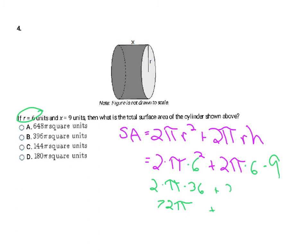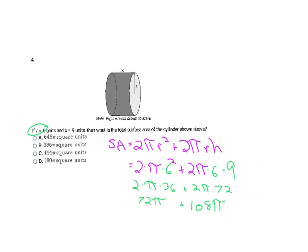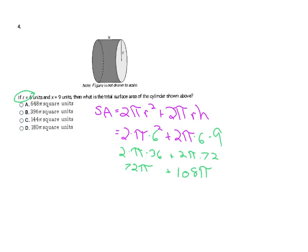For the lateral part: 2 times pi times 6 times 9 = 2 times pi times 54 = 108 pi. Since both terms have pi, I add the coefficients: 108 plus 72 = 180, giving a final answer of 180 pi, which is choice D.